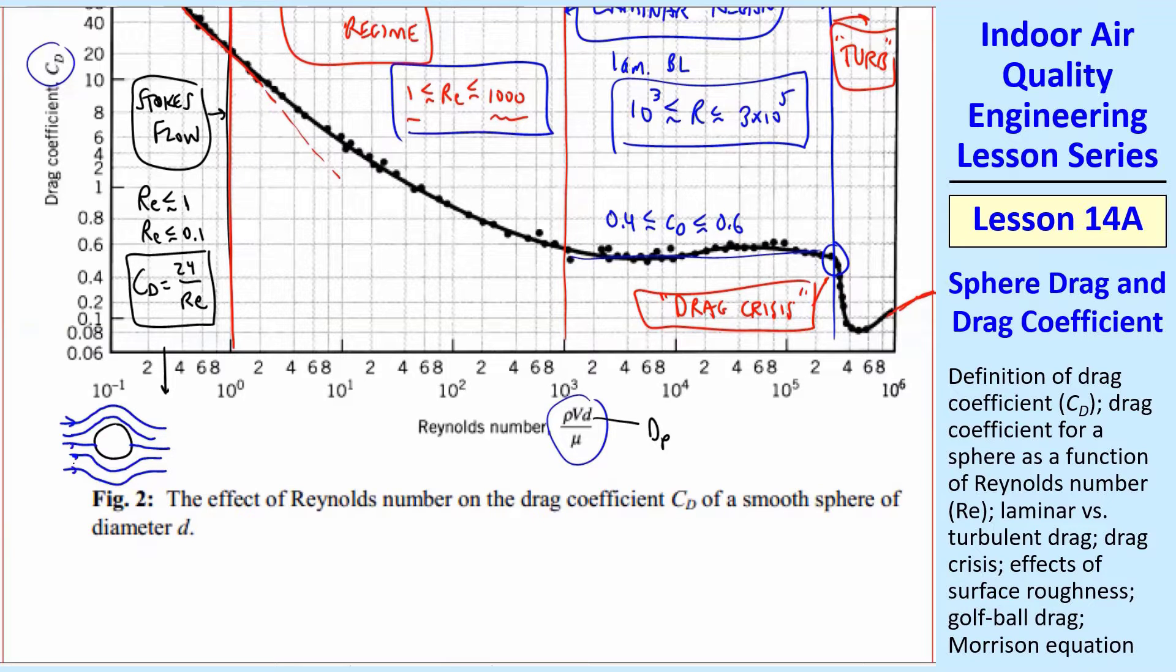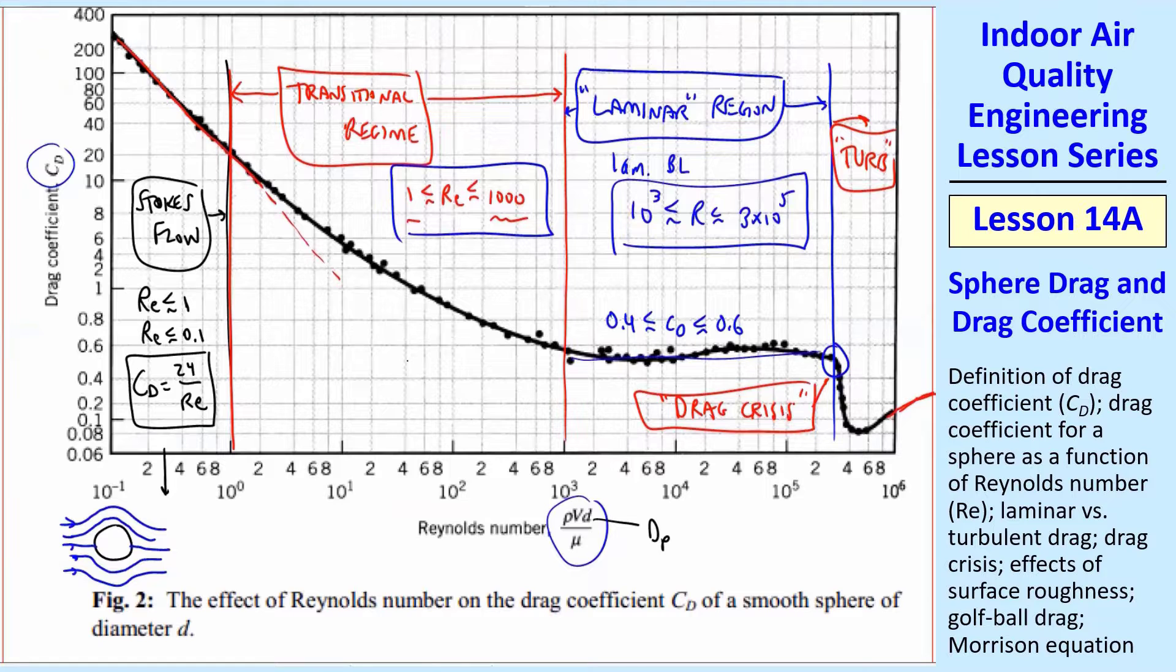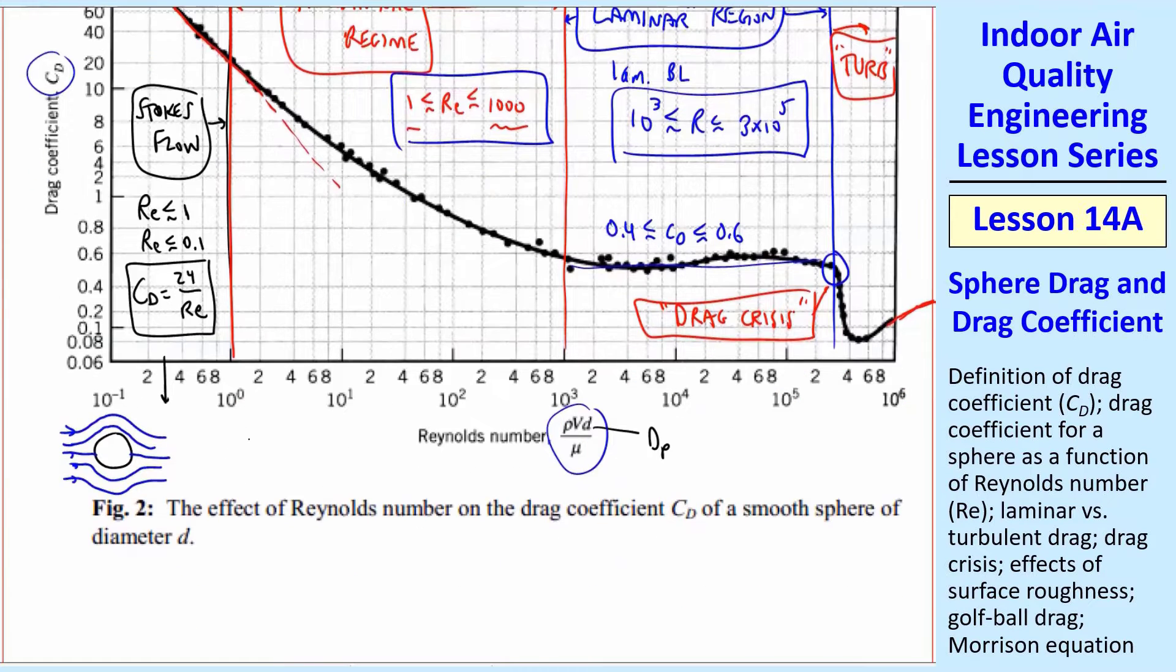Once you get into this so-called transitional region above about 1, it's no longer symmetric, but it still has the same kind of look to it. So you start developing more of a wake. This starts to get unsteady, and this is around 100.